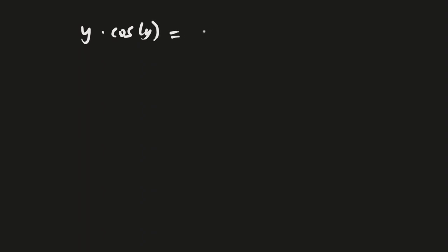In this video we're going to be finding the derivative of a function using implicit differentiation. The function we have is y times cosine of x equals 2x squared plus 3y squared.